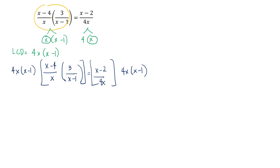Note that the left side is one term — a monomial — so the distributive property will not apply. You cannot distribute 4x times (x minus 1) to each term since this is a monomial. What we're going to do is proceed to cancellation: x divided by x is 1, and (x minus 1) divided by (x minus 1) is 1. So what's left is 4 times 3 times (x minus 4) on the left.